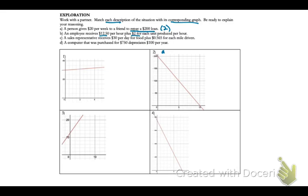Situation number three: a sales representative receives $30 per day for food plus about $0.57 for each mile driven. So you're looking for a graph that begins around 30 and then increases. That would be graph three.